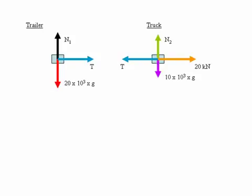Next we draw the free body diagram for the truck. Again, in the vertical direction we have the weight of the truck acting downwards and the normal reaction force N2 acting vertically upwards.